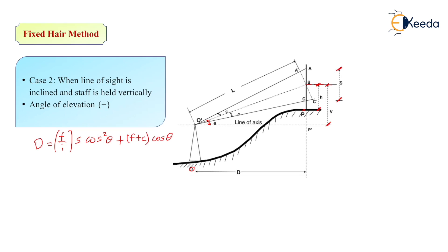Where f/i is multiplying constant, S is staff intercept, and theta is angle, f plus C is additive constant. Same way, we can find out V. V is equal to f/i times S times sin 2 theta divided by 2 plus f plus C times sin theta. So by using these two formulas, we can calculate horizontal distance and vertical distance. And by knowing vertical distance, we can calculate the RL of point T also.